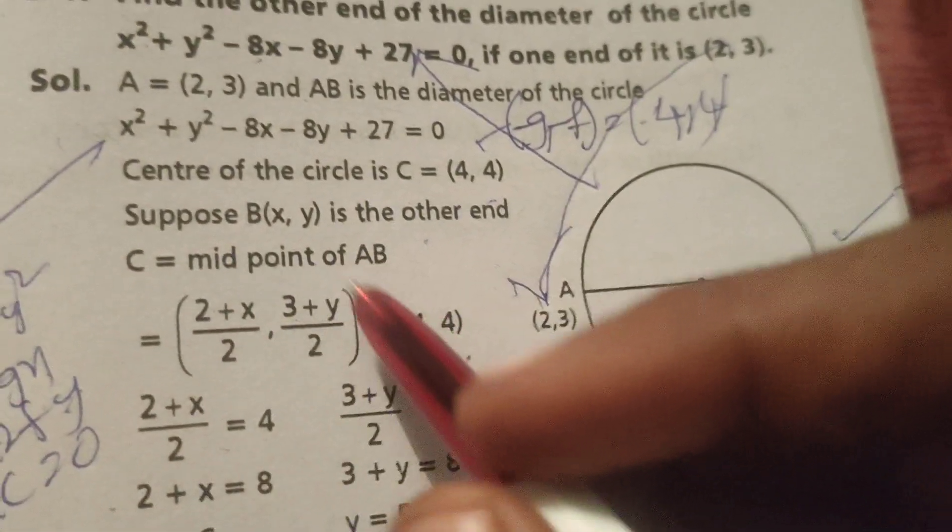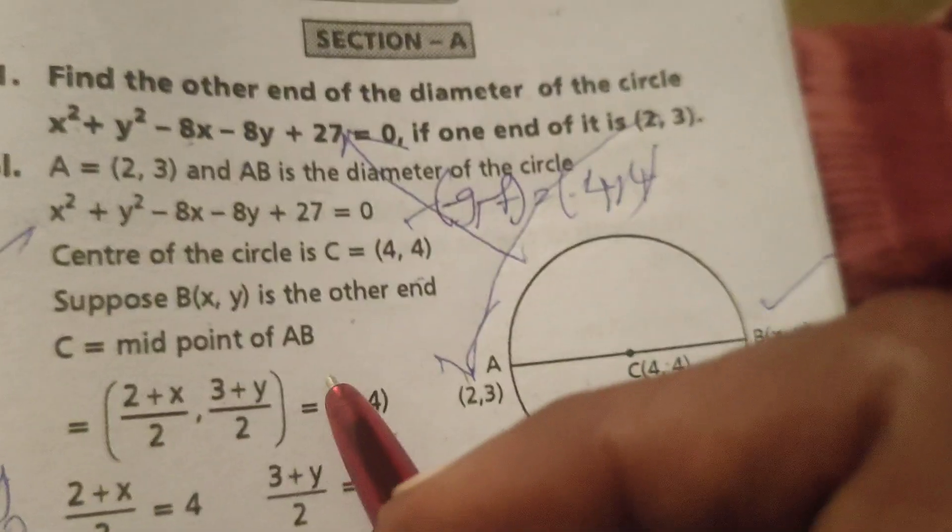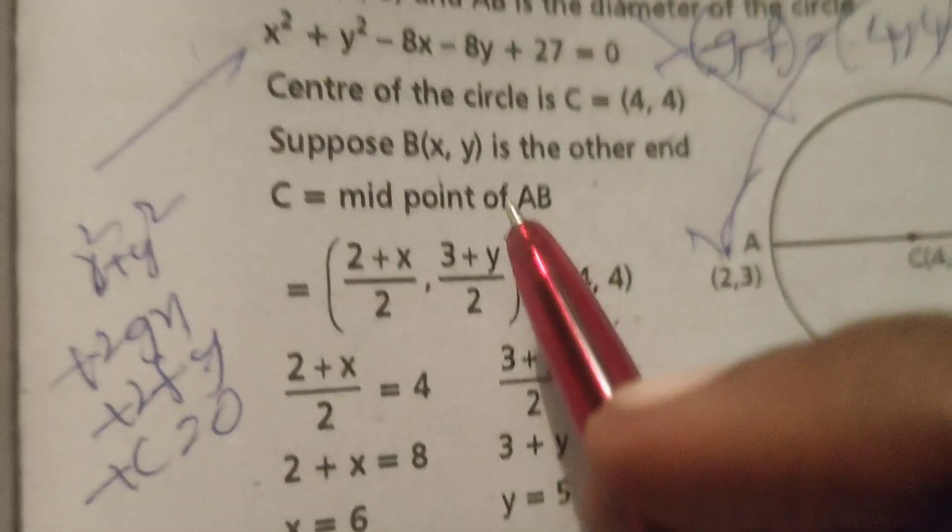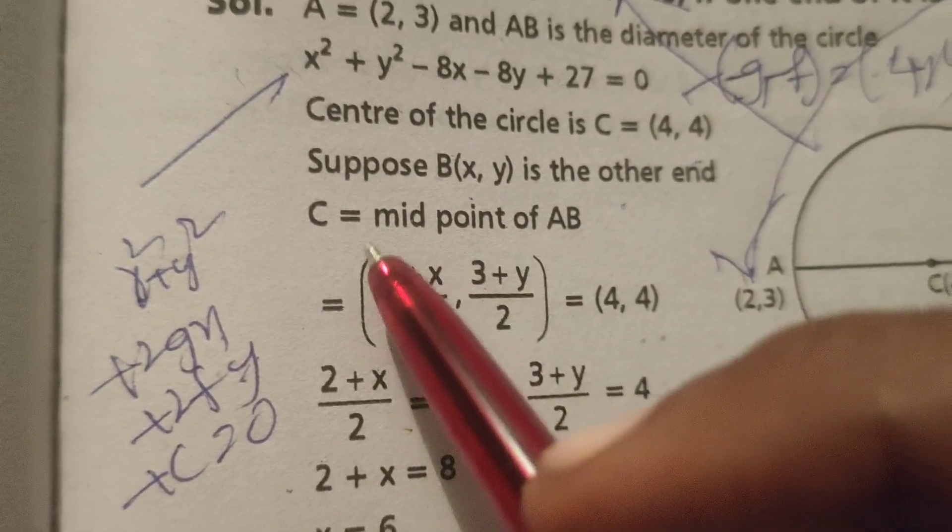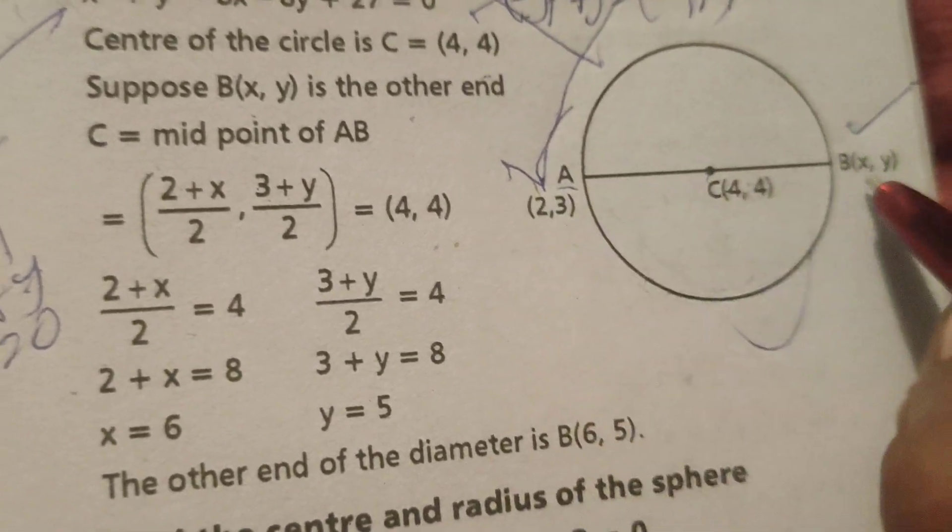Suppose B(x, y) is the other end of the diameter. Then C is the midpoint of AB.